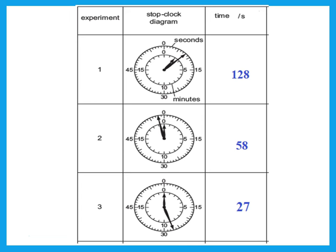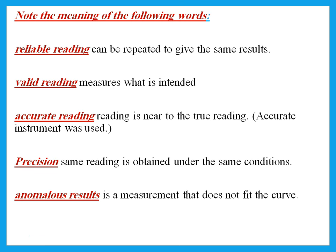Key terms: A result is reliable if you repeat it and get the same result. It is valid if it is measuring what you intend to measure. Accurate means it is near to the true reading — if the reading is supposed to be 20 and you got near that, your reading is accurate. Precise means you get the same reading under the same condition — all readings are very near to each other. Anomalous means the measurement does not fit the curve, or the point is away from the curve.